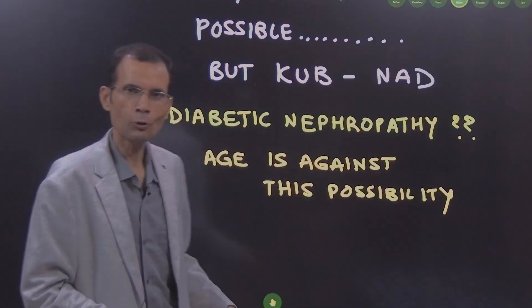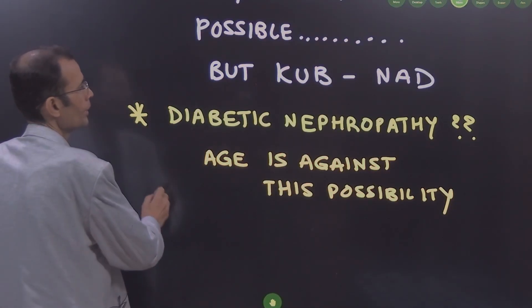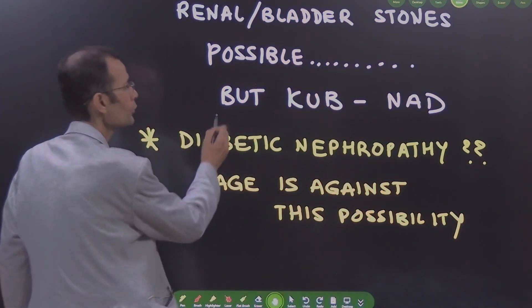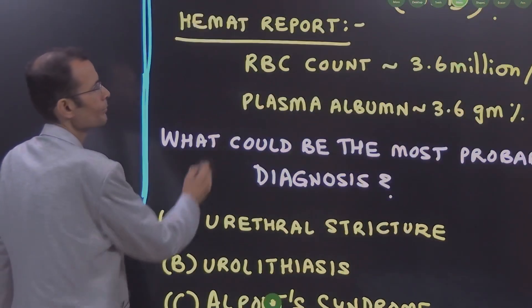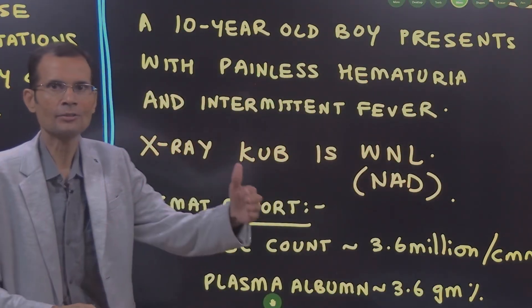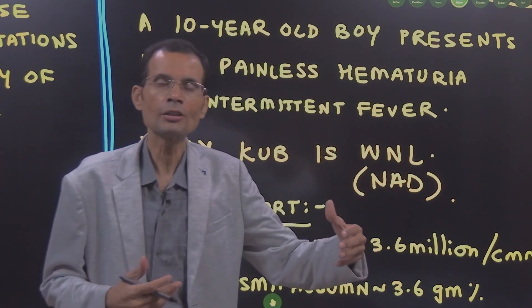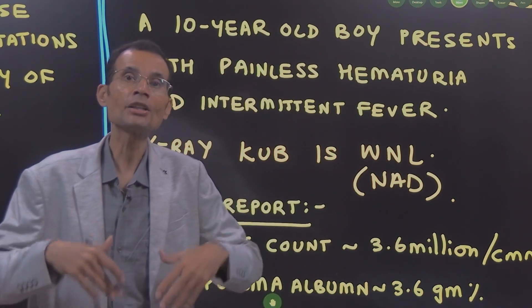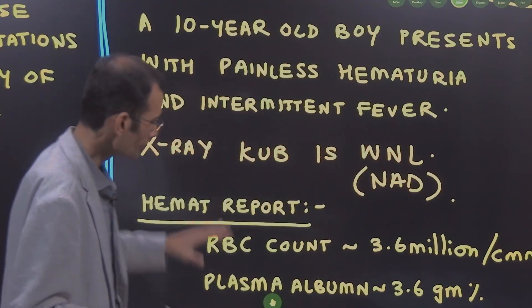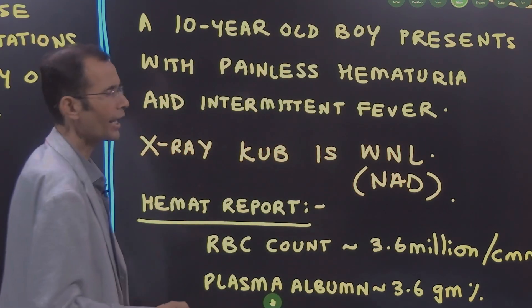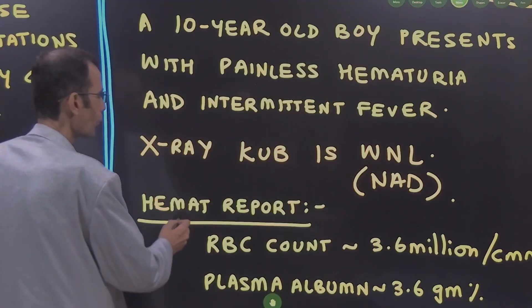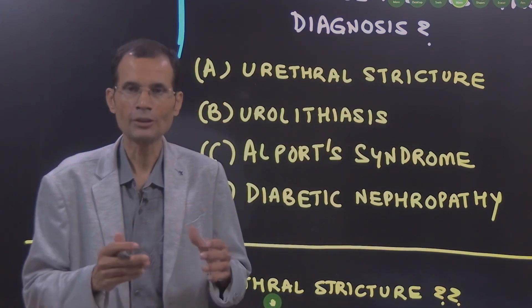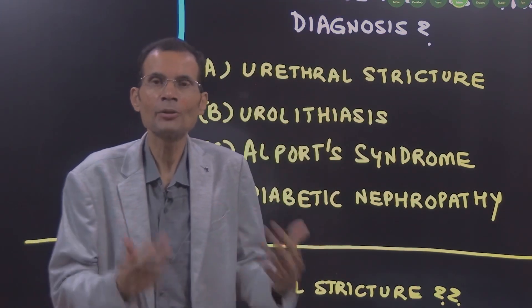Diabetic nephropathy is possible, but age is against this. It is a 10-year-old boy, and diabetes is a disease of duration — the longer the duration, the more likely complications are to appear. Complications typically appear after 20 years of diabetes duration, so diabetic nephropathy can be safely ruled out. What is left, therefore, is Alport syndrome, and that is the diagnosis based on the given data.